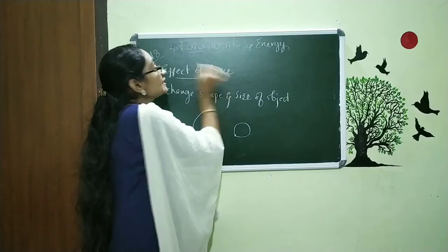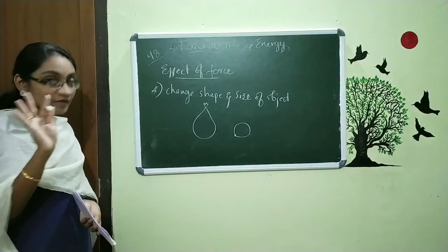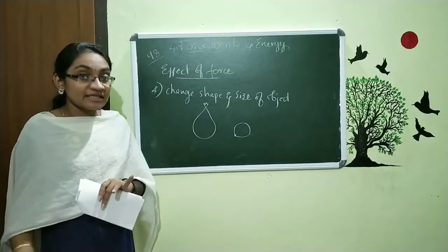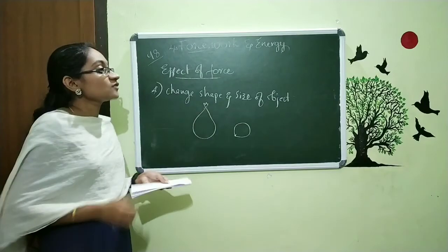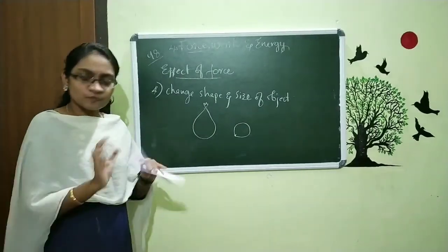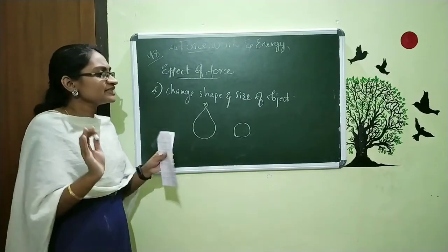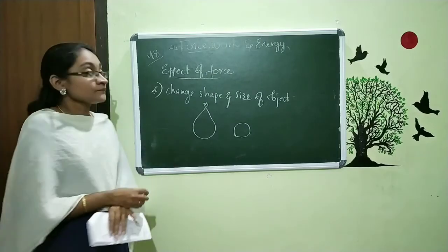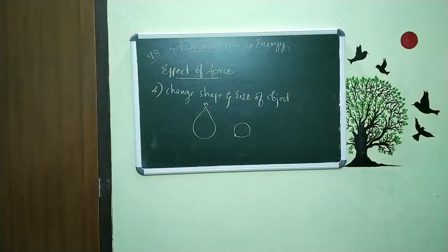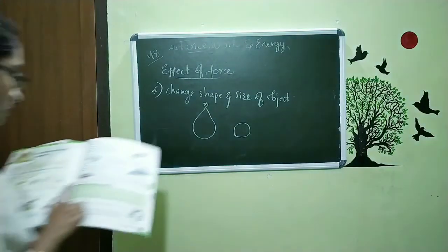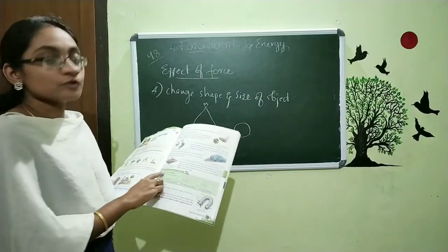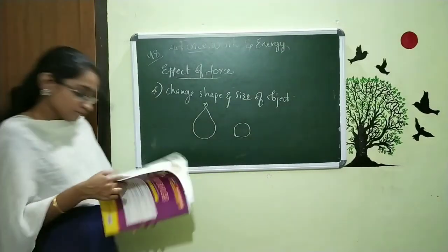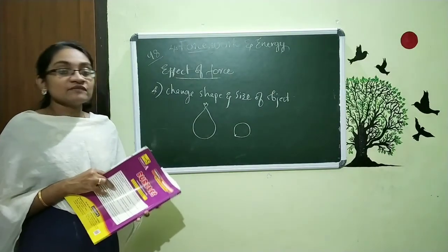So mainly we can say there are four effects. One: we can stop a moving object. Second: we can move an object which is already at rest. Third: we can change the shape and size of an object. Fourth: we can change the direction of a moving object. These are the effects of force. Today we discussed what is force, what are the different things that produce force, and the effects of force. Take your textbook — on page number 99 there is a green box with multiple choice questions. This is homework: you want to do questions 1 and 2. We will meet in the next class.